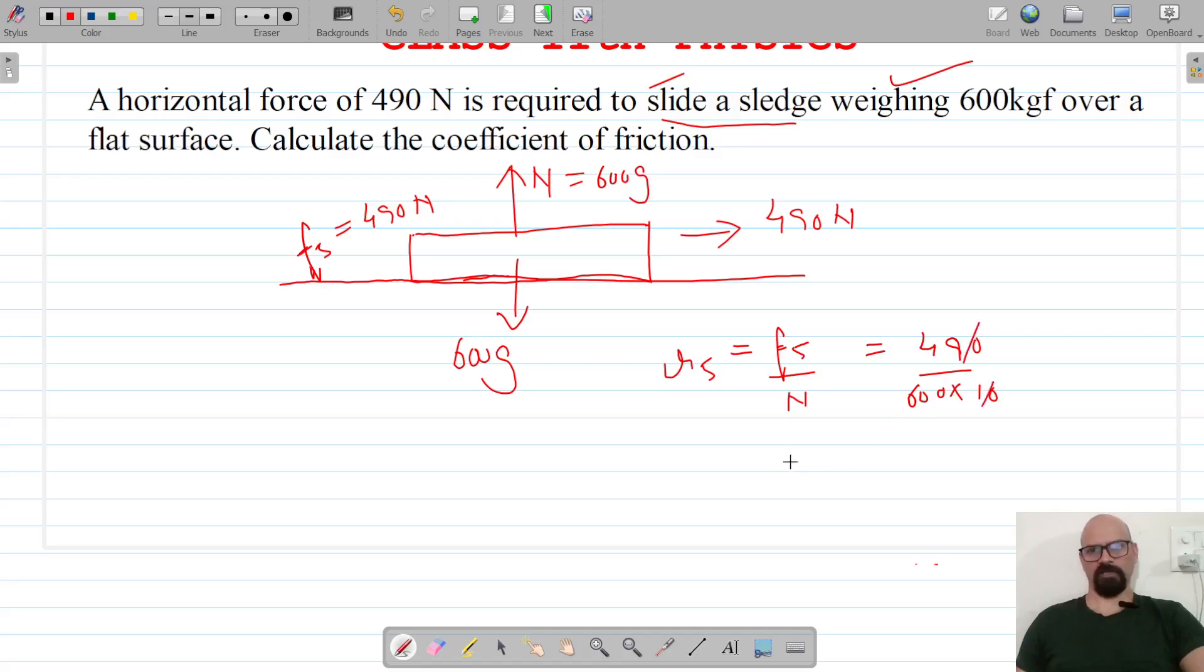So g gets cancelled and we are left with 49 divided by 600. I can write it as 49 upon 6 times 100. If we divide 49 by 6, this is 8 with remainder...